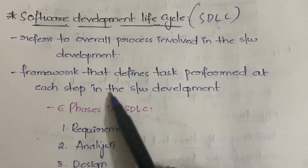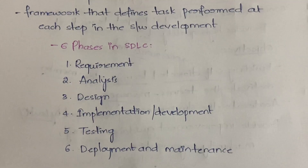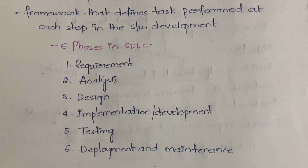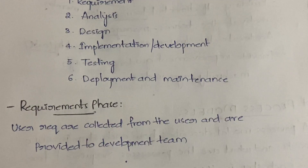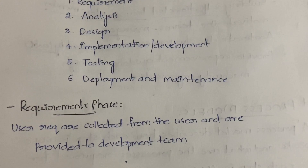SDLC also has another definition: a framework that defines tasks performed at each step in software development. We have six steps: requirement analysis, design, implementation (also called development), testing, deployment, and maintenance. In the requirements phase, user requirements are collected from the user and provided to the development team. For example, if you take a contract to build a house, you first go to the buyer and ask what type of house they want — one floor, two floors, duplex, with parking, etc.